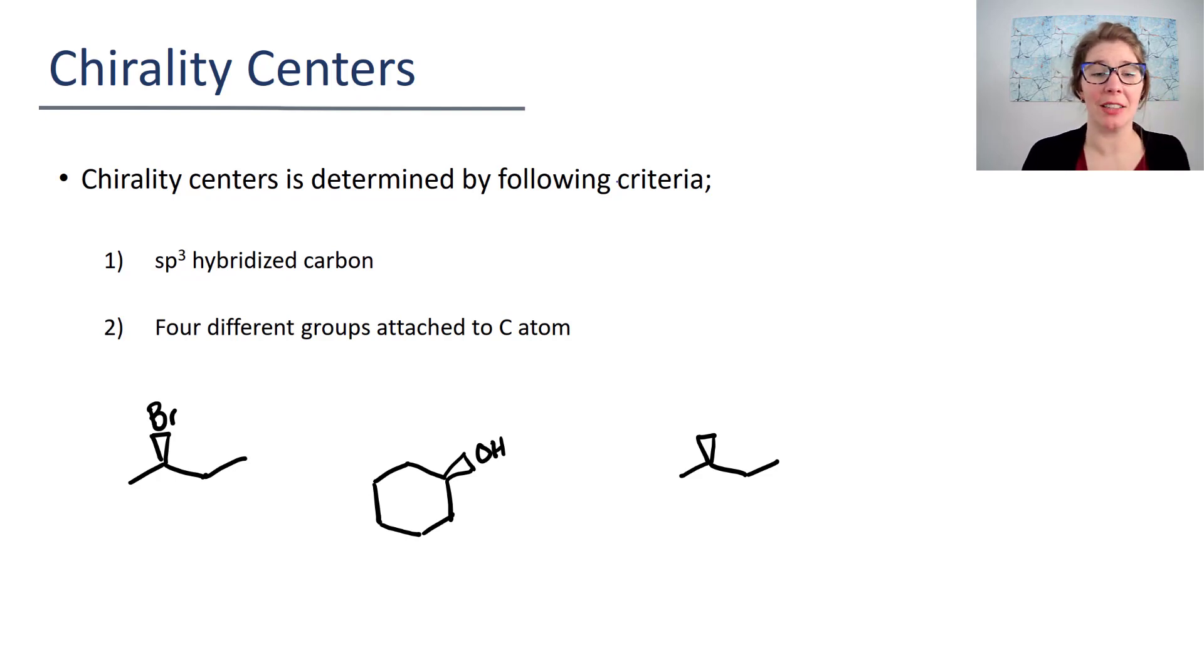One, you have to have an sp3 hybridized carbon. And two, you have to have four different groups attached to that carbon. Let's look at these examples.